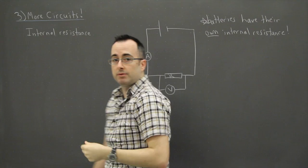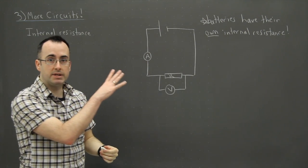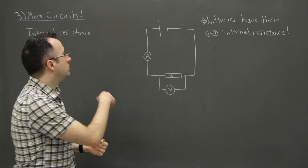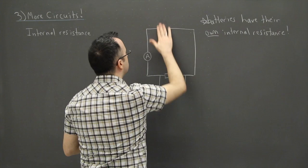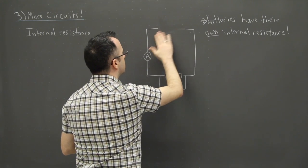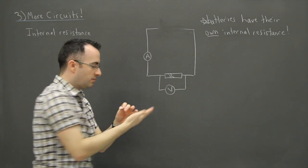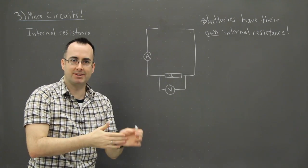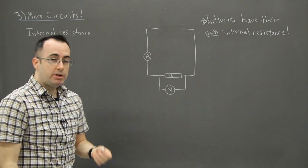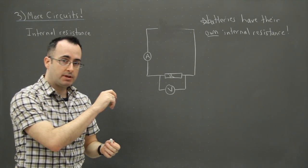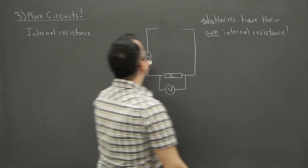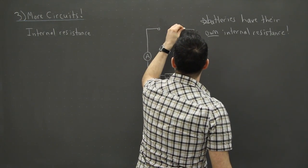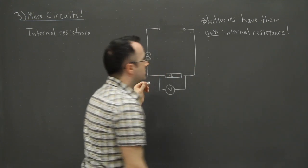So what I'm going to do is I'm going to erase a little piece of this circuit and then show you what to do instead. So instead of this regular battery, we redraw the battery because the battery itself has its own resistance.